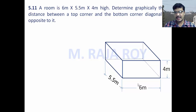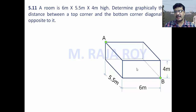Here the room you can consider like this. This length is 6 meters, this width is 5.5 meters, and this height is 4 meters — these are the dimensions of the room. Now, this corner you assume as A. The diagonally opposite but bottom corner you consider as B. This is like a solid diagonal of the room, and the line joining AB is the distance we have to find.